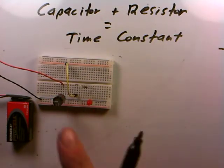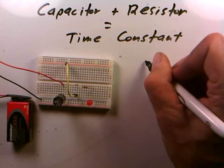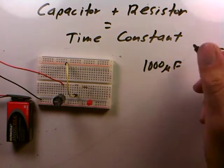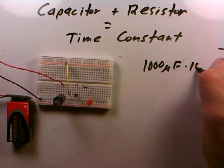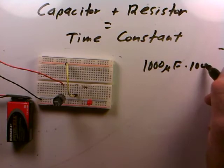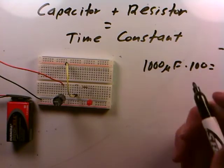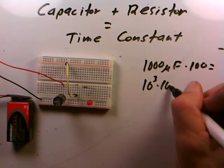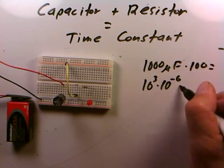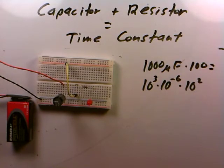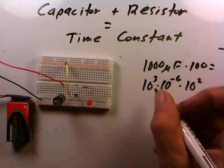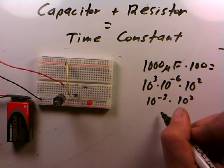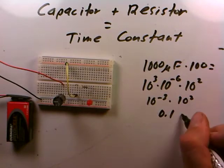The capacitor that I have installed is a 1,000 microfarad capacitor, and the resistor is 100 ohms. So if we just multiply the 2, you have to be careful with the micro. A thousand is 10 to the third, micro is 10 to the minus 6, and then I have 10 to the squared for a hundred. So this is gonna be something like 10 to the minus 3 times 10 squared and that's gonna be 0.1 seconds.